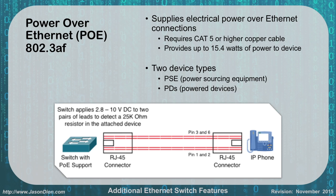In my diagram here, the switch is the PSE — the power sourcing equipment — providing 15 watts of power to the IP phone, which is the powered device. The real benefit of power over Ethernet can be found in uses such as VoIP and security cameras. Instead of having a data cable and a separate power outlet run to that phone or camera, you can run it all over a single Category 5 or above cable and provide the power through the switch. This is good for low-powered devices like security cameras and VoIP phones.